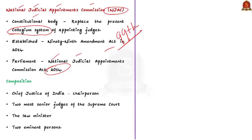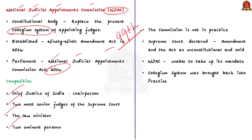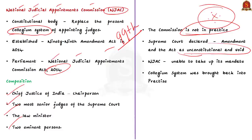According to this Act, NJAC will consist of six people: the Chief Justice of India as chairperson, two other senior-most judges of the Supreme Court, the Law Minister, and two eminent persons. But remember, this body is not in practice — we only have the Collegium System. This is because the Supreme Court of India declared the 99th Constitutional Amendment and the NJAC Act to be unconstitutional and void. Independence of the judiciary is a basic structure of the Indian Constitution, and the Supreme Court believed that the 99th Amendment and NJAC Act affect that independence.